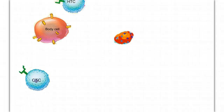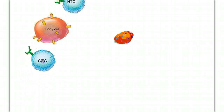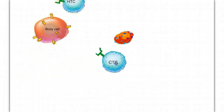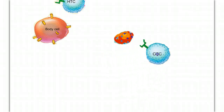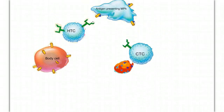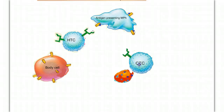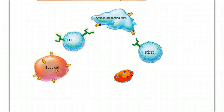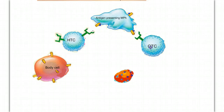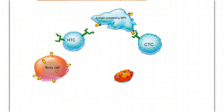Cytotoxic T-cells behave the same way. They ignore healthy body cells, and they ignore pathogens — moving right past them. What they do recognize and pay special attention to is the MHC-antigen complex, the combination. When the cytotoxic T-cell binds to the MHC-antigen complex, it gets primed.